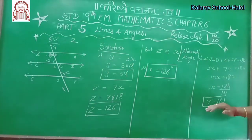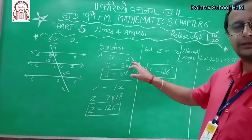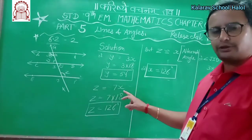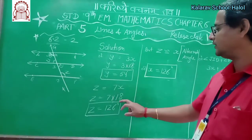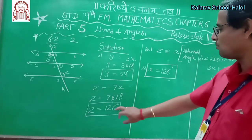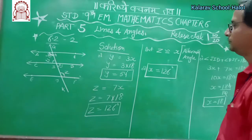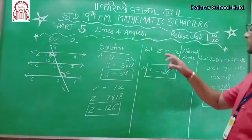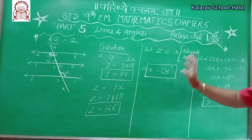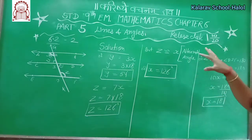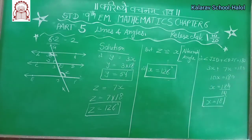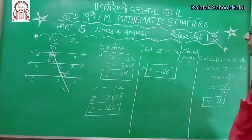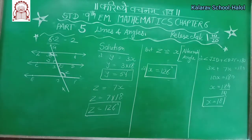You got the value of X as 18. Y equals 3X, so Y equals 3 times 18 equals 54. Z equals 7X, so Z equals 7 times 18 equals 126. If you add 54 and 126 you will get 180. Z and X are alternate angles, so Z is congruent to X. Therefore X equals 126. The value of X is 126, Y is 54, and Z is 126.